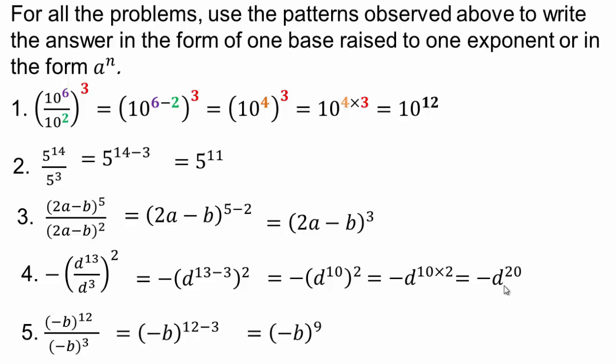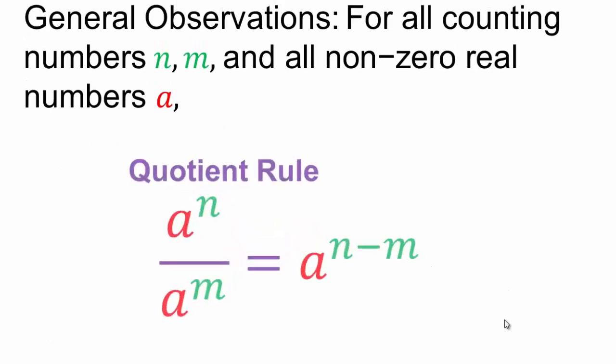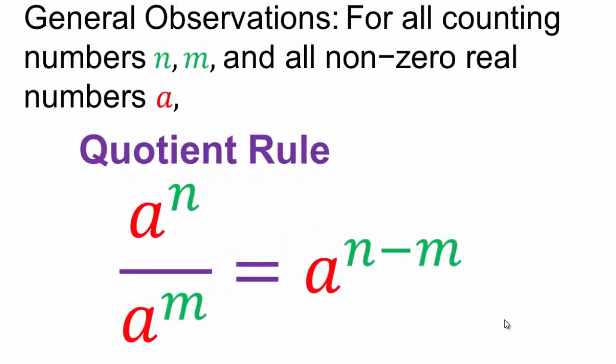If not, rewind and watch it over and over again until you really get it. Our general observation is that when you have a to power n divided by a to power m, you can take the numerator power and subtract the denominator power.